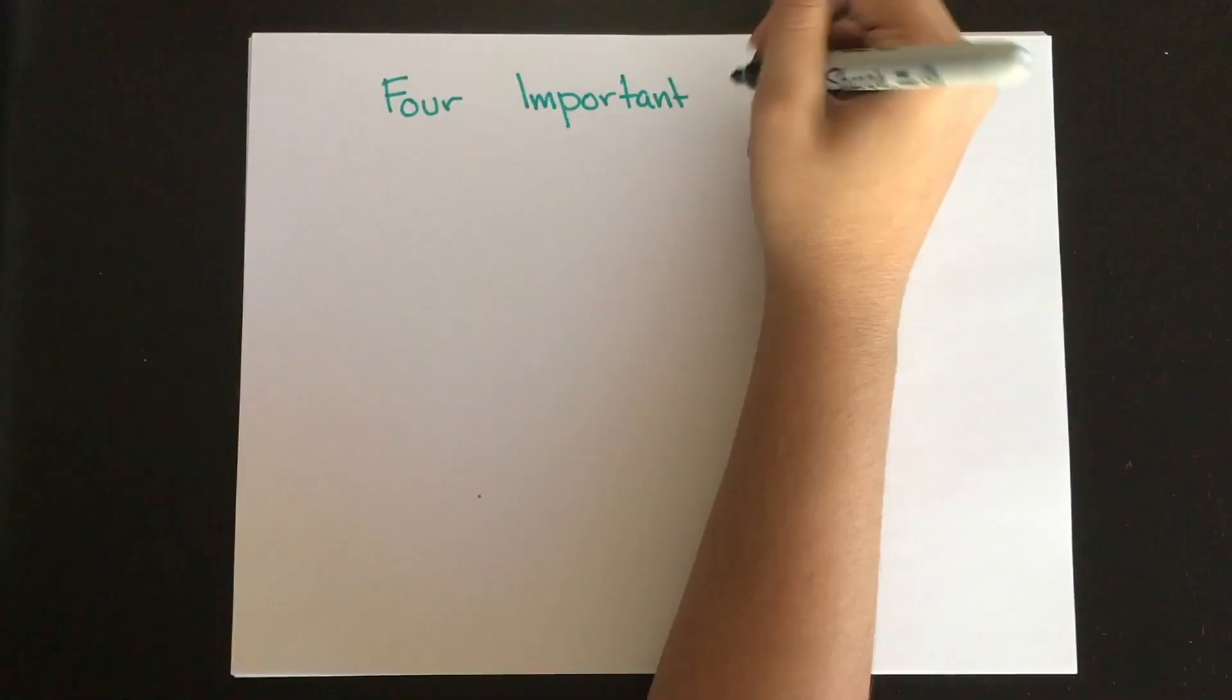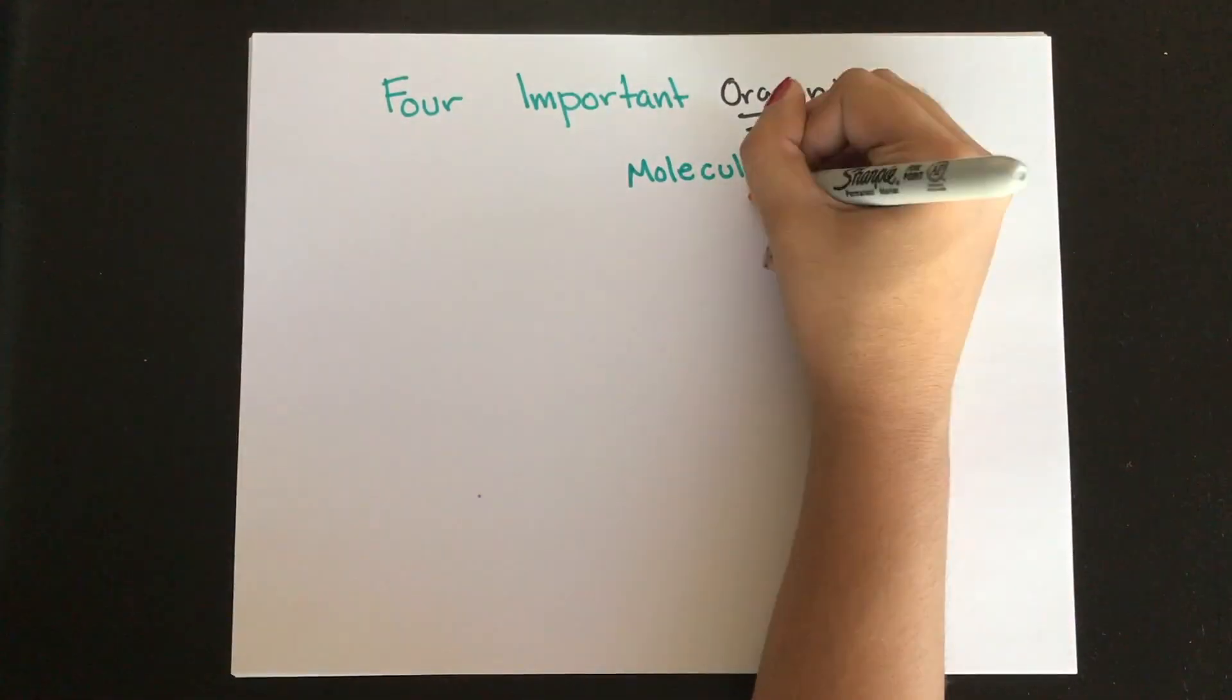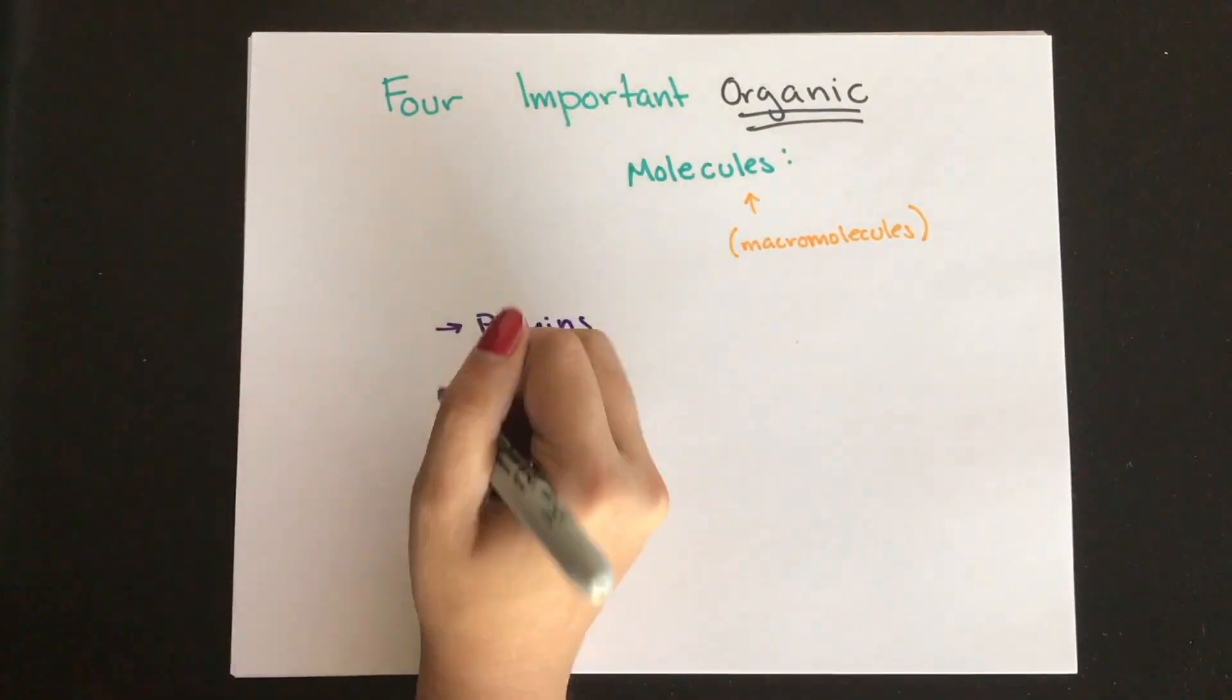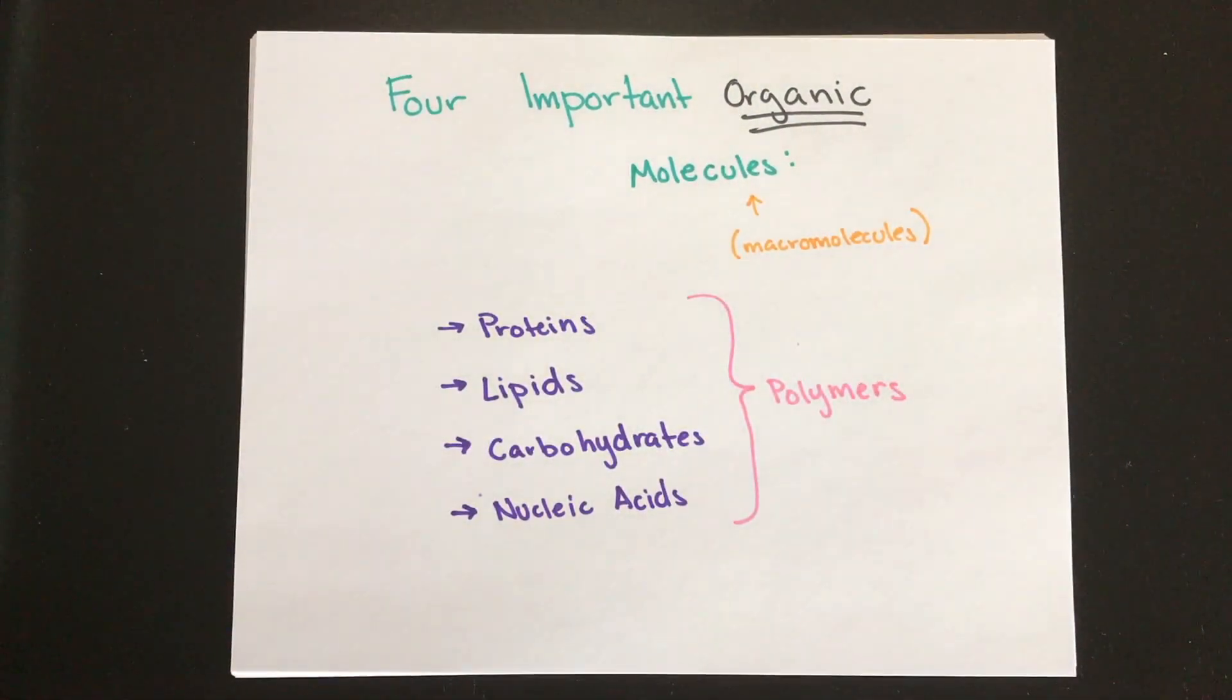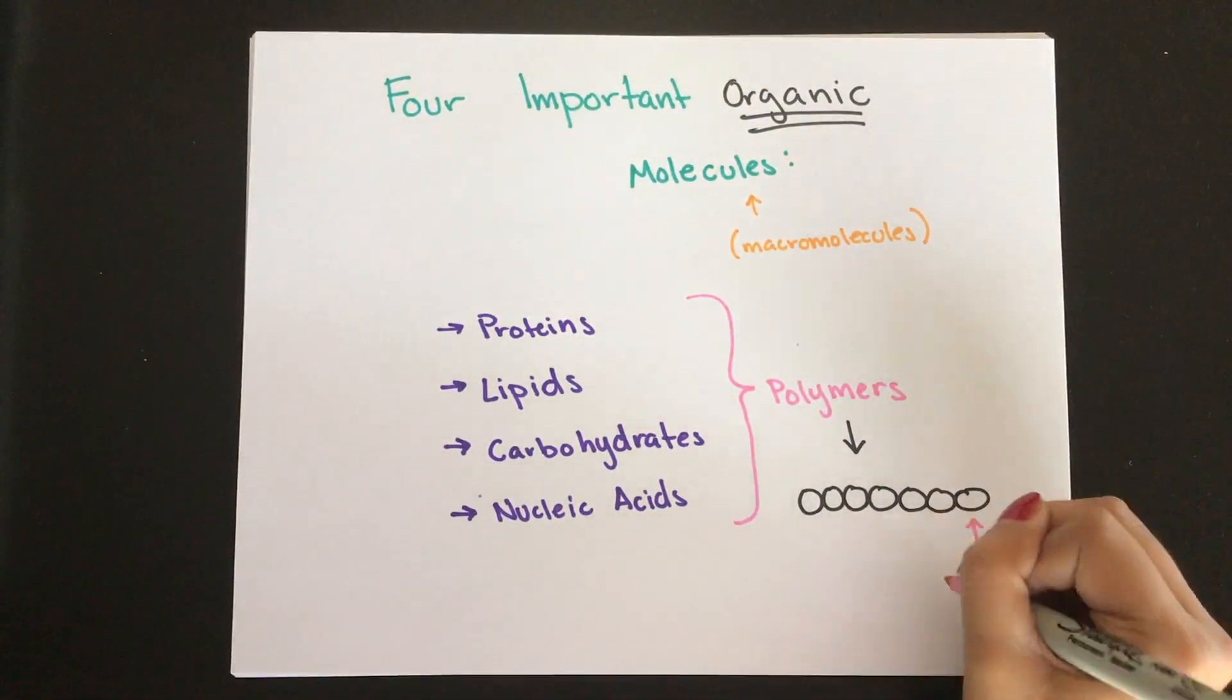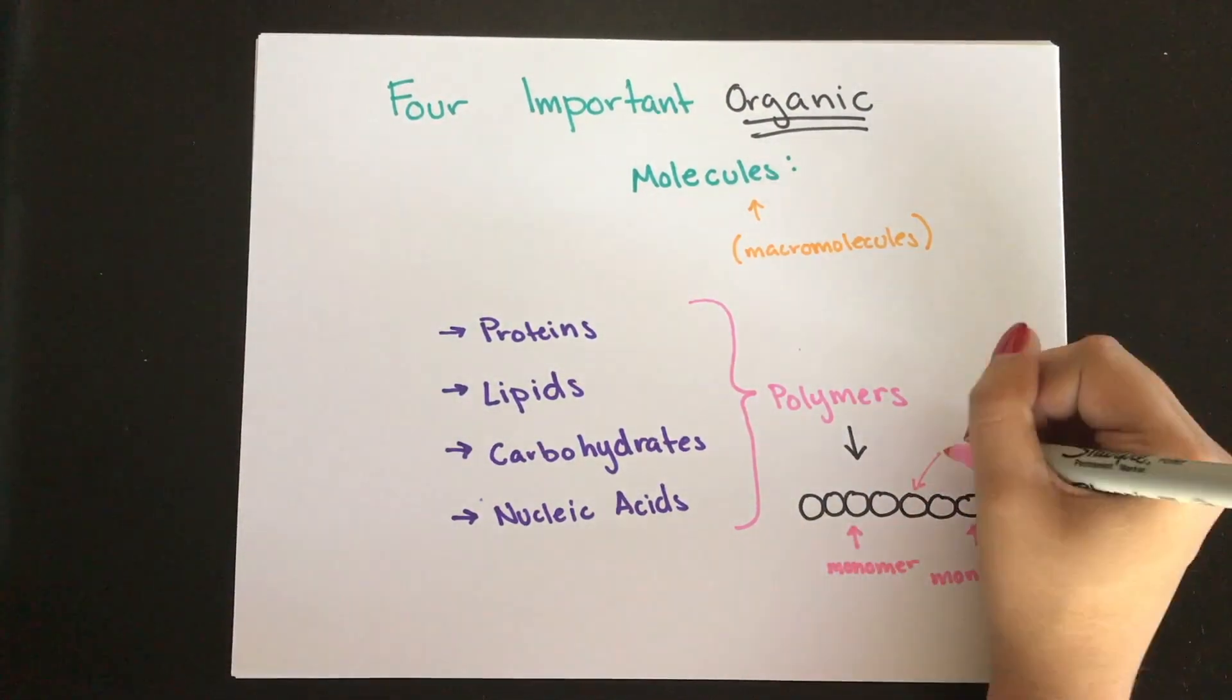Now, the four important organic molecules, or macromolecules, we're going to talk about are proteins, carbohydrates, lipids, and nucleic acids. Each of these macromolecules are polymers, which are strings of repeated units known as monomers.